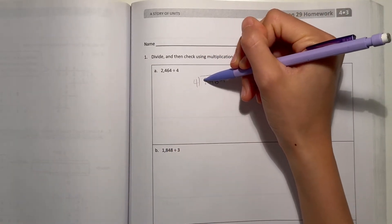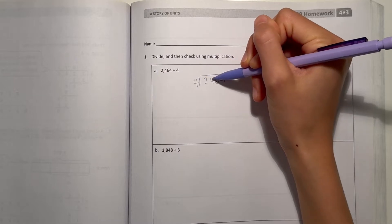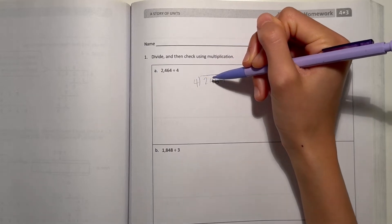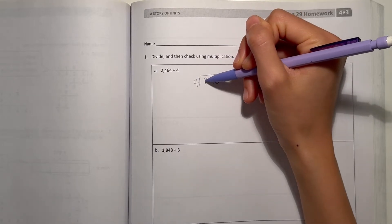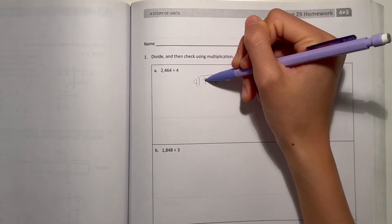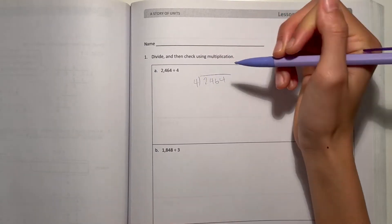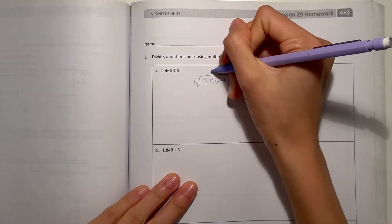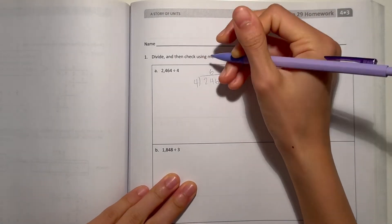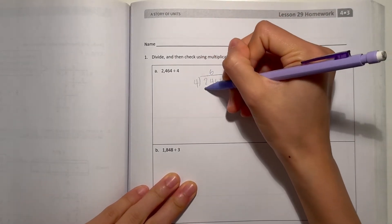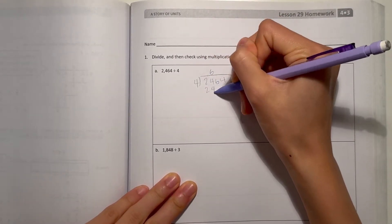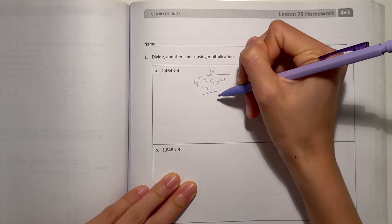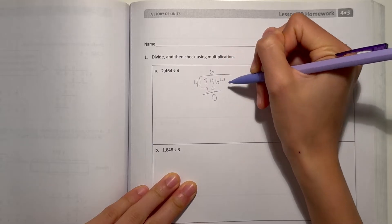4 can't go into 2, so we go to the next column. Now instead of 2, we have 24. 4 goes 6 times. 4 times 6 is 24.